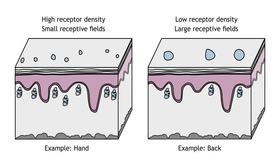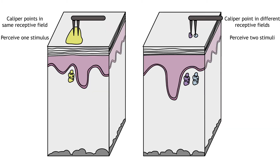Receptive field sizes are important because they allow us to locate a stimulus on our bodies. Larger receptive fields are not as precise as smaller receptive fields. One measure of receptive field size is two-point discrimination, which determines the minimum distance needed between two stimuli to perceive two separate points on the skin and not one. The hand has a smaller threshold for discerning between two points than does the back, a result of the different sizes in receptive fields.